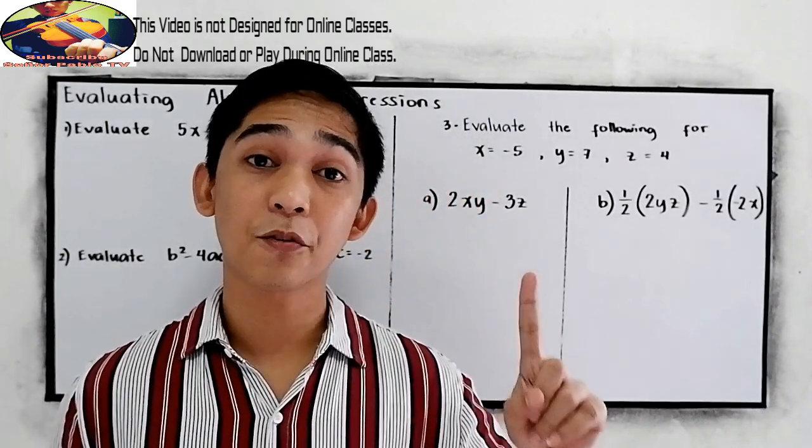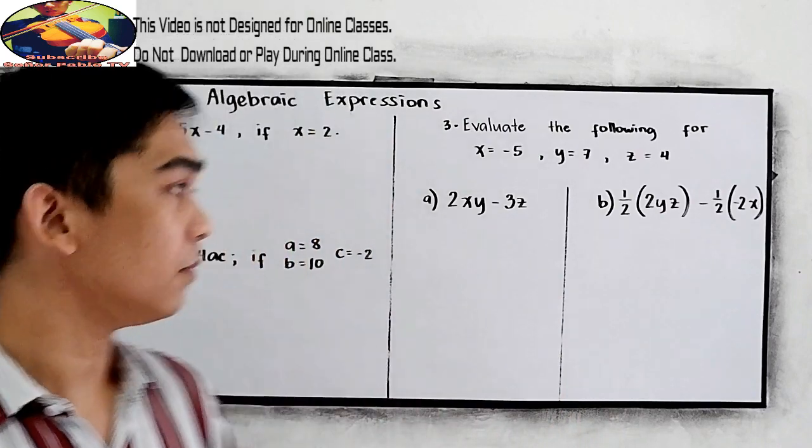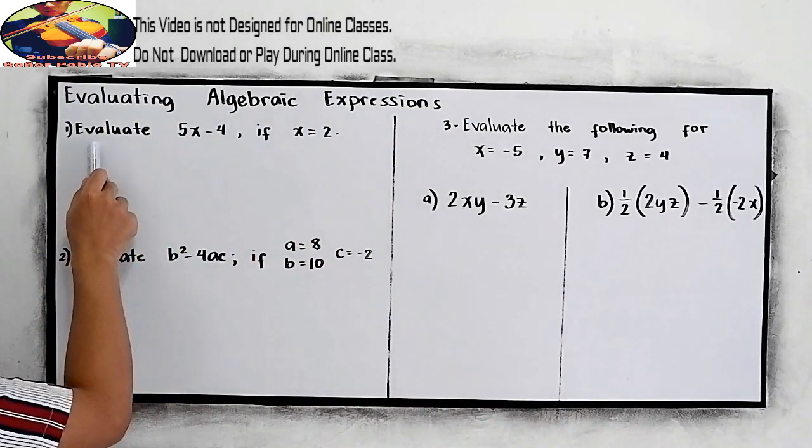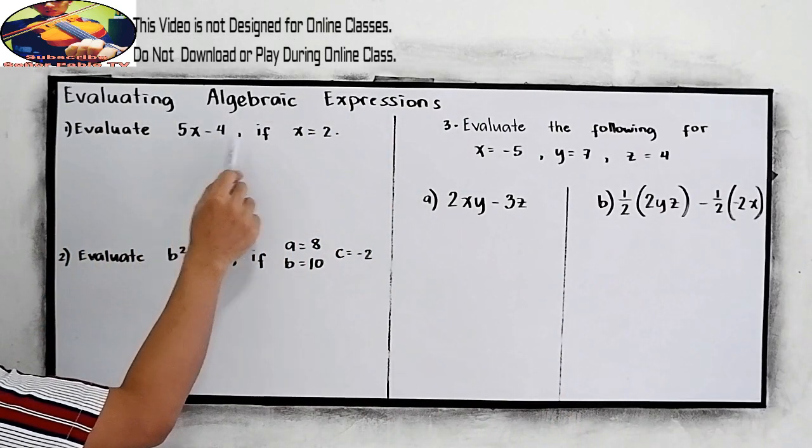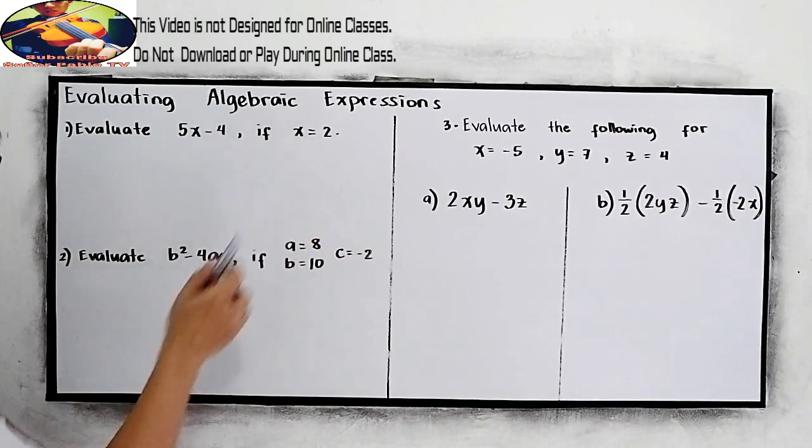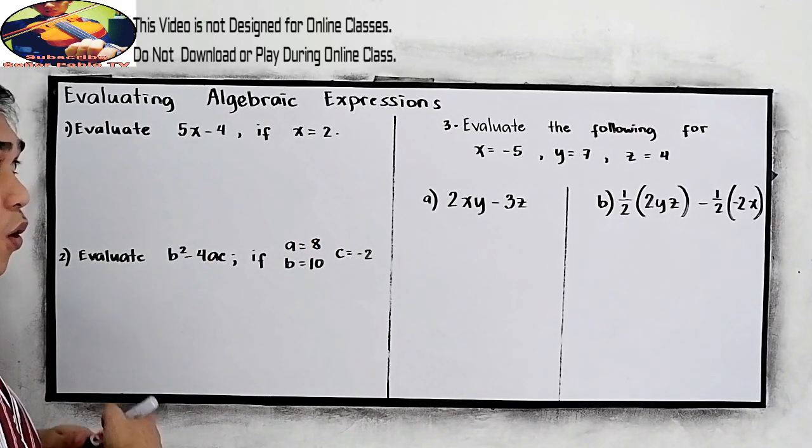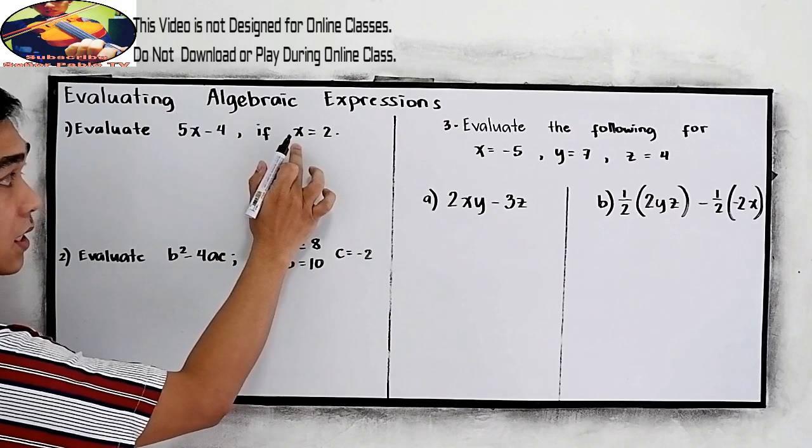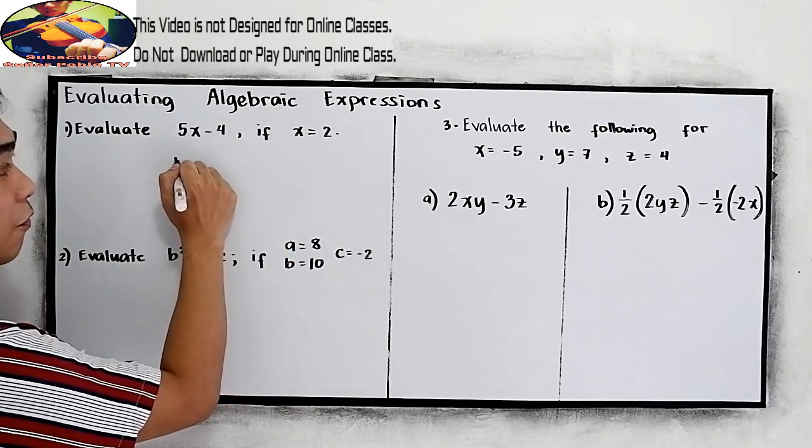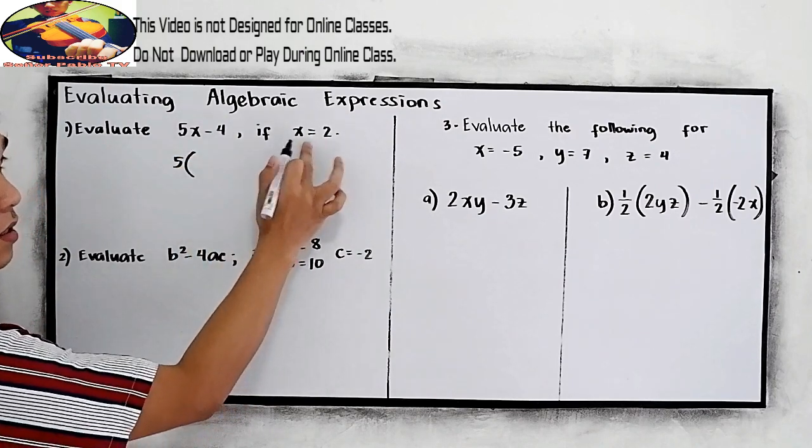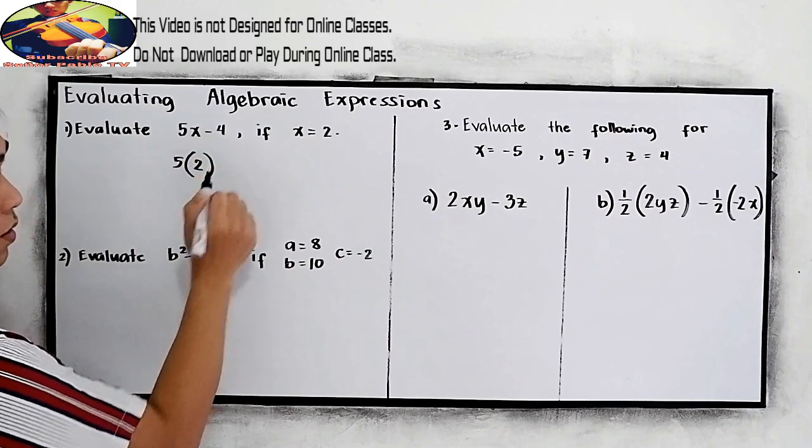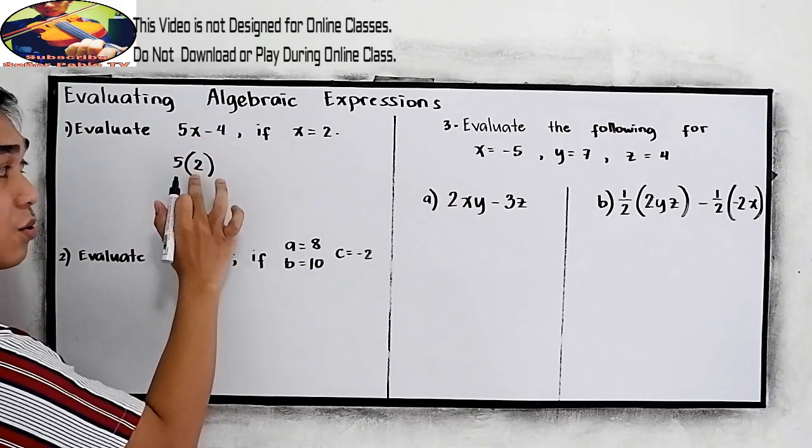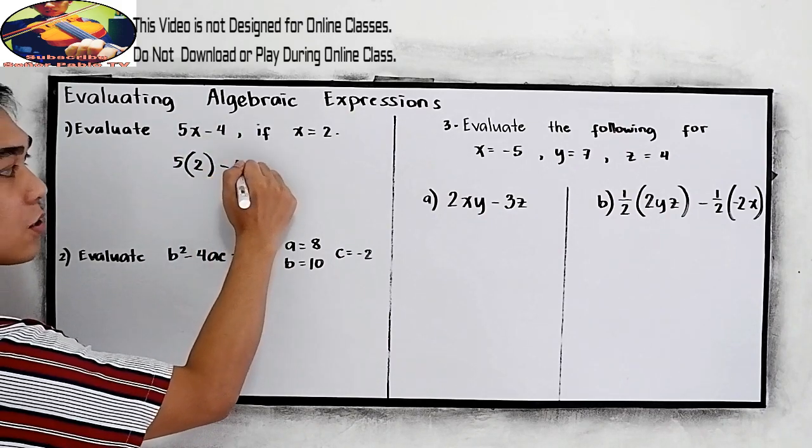So let's try our first example. Evaluate 5x minus 4 if x is equal to 2. We're going to substitute 2 to our x. So we have 5 times 2, just change x to 2, then copy minus 4.